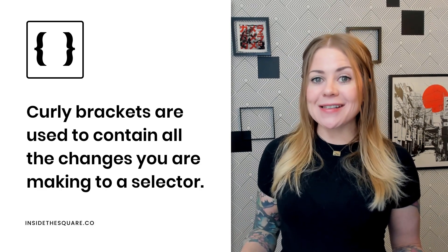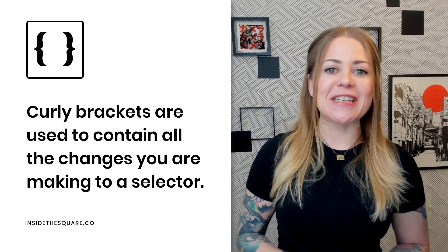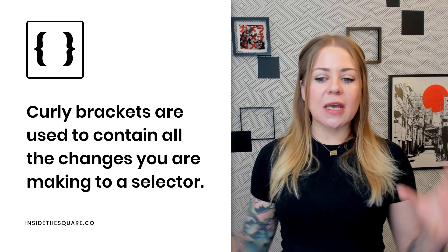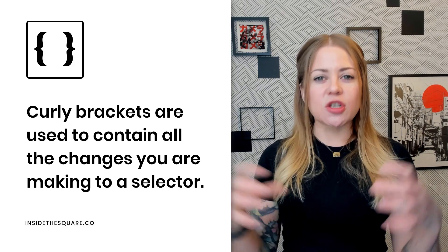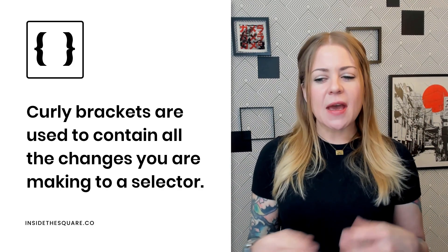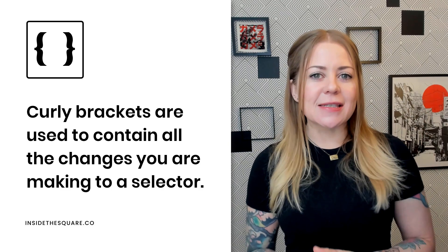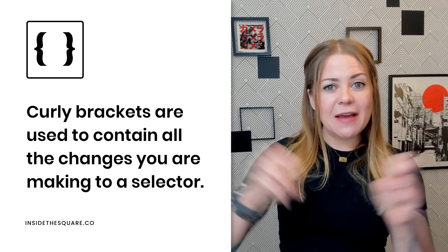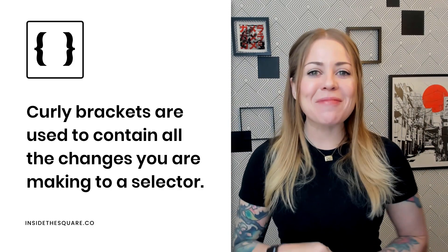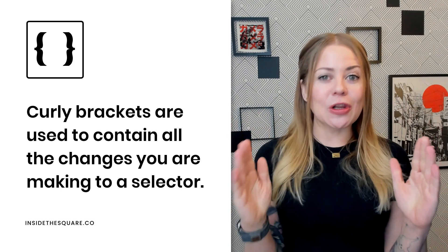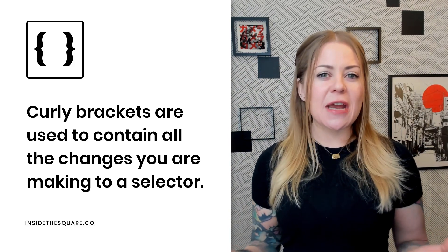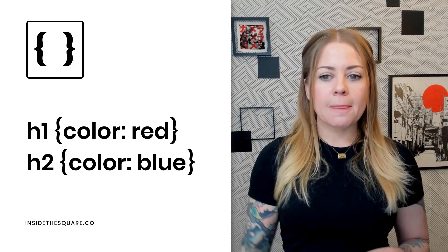Next up, we have the curly brackets. This is in every single piece of CSS that you're ever going to write. Curly brackets are used to keep all of the changes you're making to a selector in one easy-to-reference place for your browser. I like to think the left bracket is saying, here's the code I'm about to give you, and then the right bracket says, okay browser, I'm done. You've got to make sure you have both opening and closing brackets for every set of properties and values.